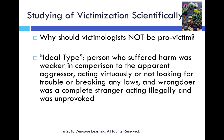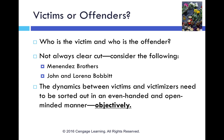Victimologists are not supposed to be quote 'pro-victim.' When we think about an ideal-type victim — what the media often portrays — we're talking about a person who suffered harm, was weaker compared to the aggressor, was acting virtuously, wasn't looking for trouble, wasn't breaking any laws, and faced a complete stranger acting illegally and unprovoked. But we know from studying crime that this is pretty rare — most victims are not completely innocent.